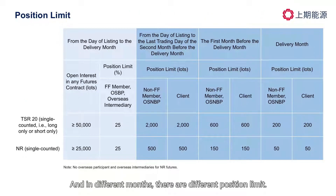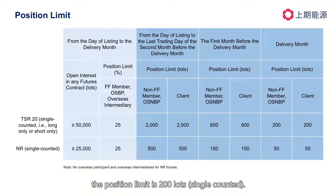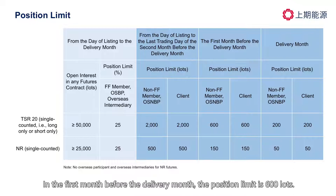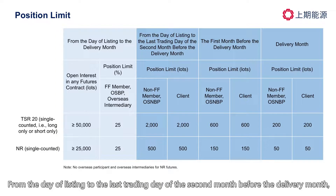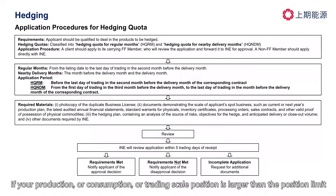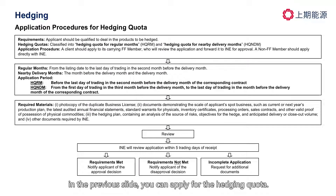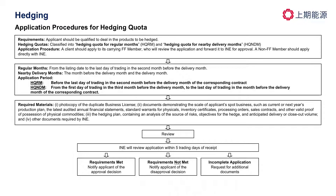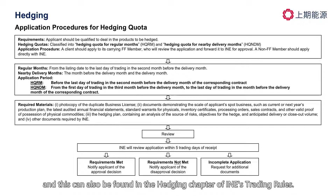In different months, there are different position limits. In the delivery month for clients, non-FF members, and OSNBPs, the position limit is 200 lots, single counted. In the first month before the delivery month, the position limit is 600 lots. From the day of listing to the last trading day of the second month before the delivery month, the position limit is 2,000 lots. If your production, consumption, or trading scale position is larger than the position limit, you can apply for a hedging quota through the procedure shown on this slide, also found in the hedging chapter of INE's trading rules.